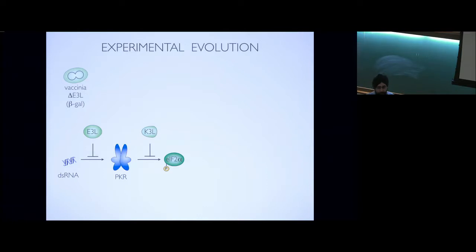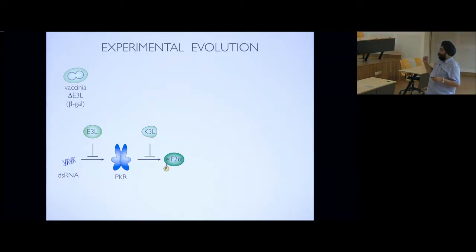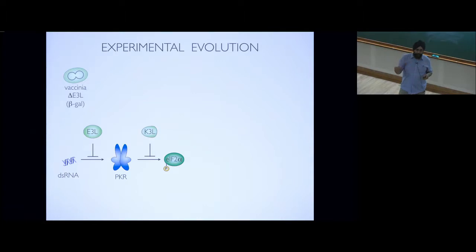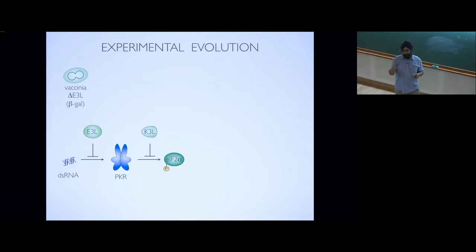Pox viruses are at the other end of the spectrum. Unlike RNA viruses, pox viruses can be about 200 Kb in size — at the edge of what you'd even consider a true virus, more like giant viruses. So they cannot afford a mutation rate anywhere close to what RNA viruses can afford. And yet some of these viruses are just as successful at jumping between species and dealing with completely new immune systems. We became very interested in how slowly-evolving viruses can adapt so quickly.